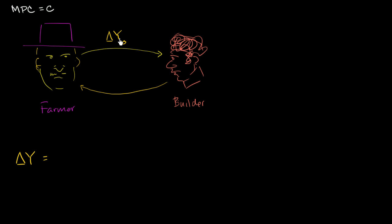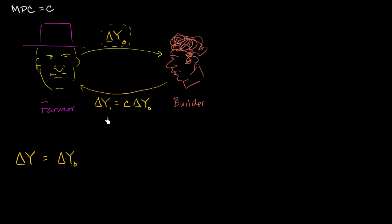This is the first iteration, and then as we keep going we're going to have Y1, Y2, Y3, and so on. So the total change in GDP will definitely include delta Y0 — in the last example, this was $1,000. But then this guy's marginal propensity to consume is C, so he's going to spend C times that income. So delta Y1 — the next incremental bump in GDP — is equal to C times delta Y0.